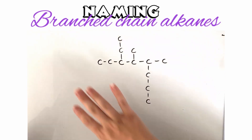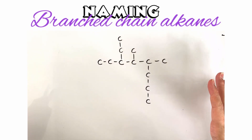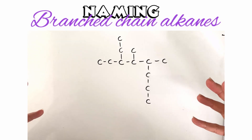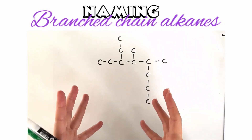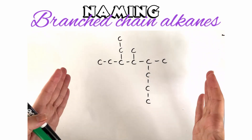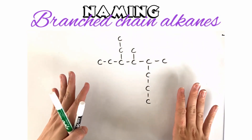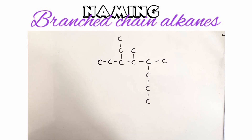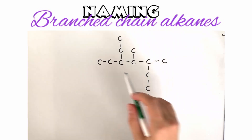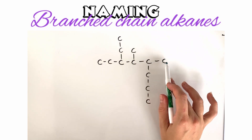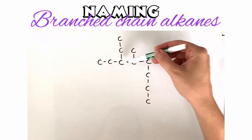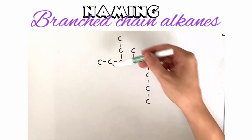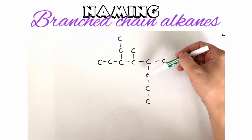Here's another example. I haven't modeled this one — it would be too confusing — and I've left off the hydrogen atoms so you can see the carbon atoms more clearly. Remember, we start by finding the parent chain. We have six carbons across here, but if we look this way and come down we get one, two, three, four, five, six, seven, eight.